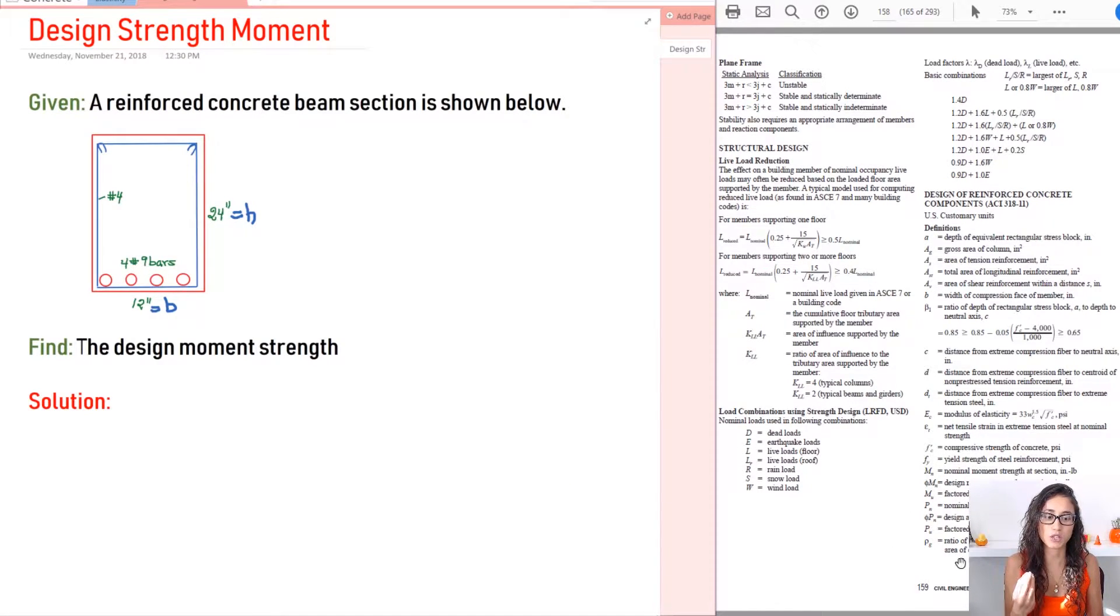So the second thing that I would like to point out is the three different moments that we have. So if you go to page 159 under the definitions you will see that we have MN which is the nominal strength, then we have phi MN which is the design moment strength and we have MU which is the factored moment.